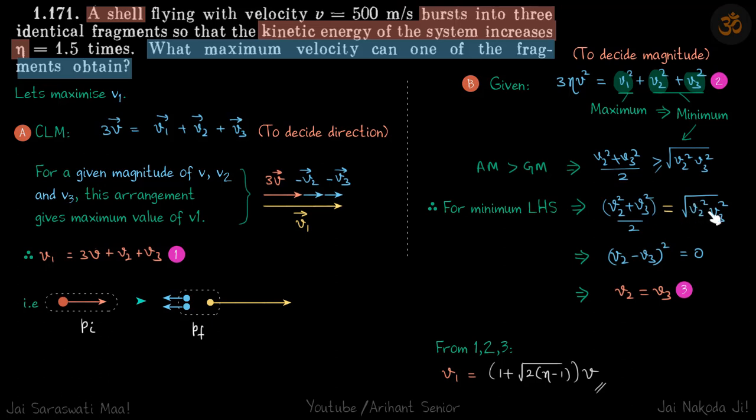You can imagine that this simplifies to (v2 minus v3) whole squared equals 0, which means v2 must be equal to v3. So now we have three equations and we have three variables v1, v2, and v3, so now we can solve for v1 and we will get that answer in terms of η and v, which is our answer.